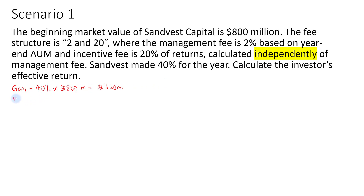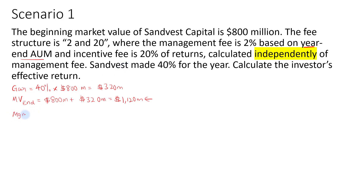The ending market value will be the beginning market value of $800 million plus the gain for the year, giving us $1,120 million. We will use this number to compute the management fee since the 2% is based on year-end AUM. So the management fee equals 2% multiplied by $1,120 million, which gives us $22.4 million.